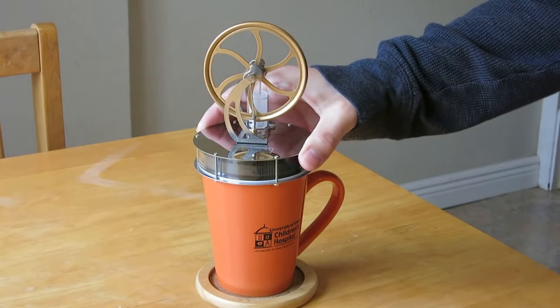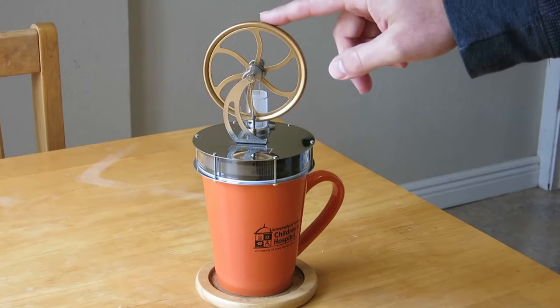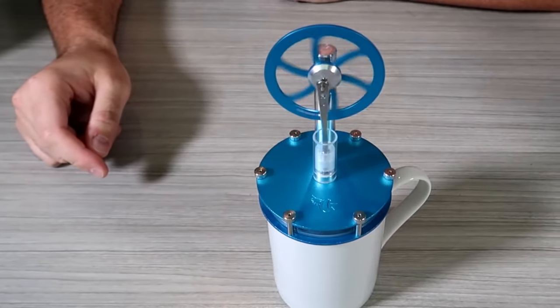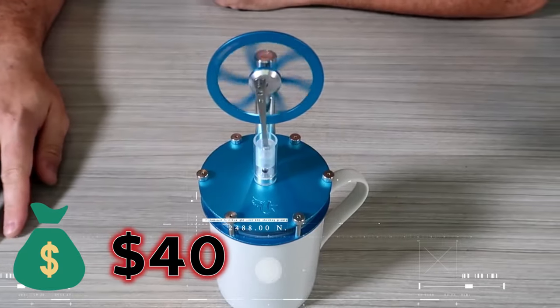And as long as the temperature differential is maintained, it will keep running. And when you see that the engine is slowing down, you can just add some ice to the top of the panel to increase the temperature difference so it keeps running. But the best part about this Stirling engine model is that it costs only $40.